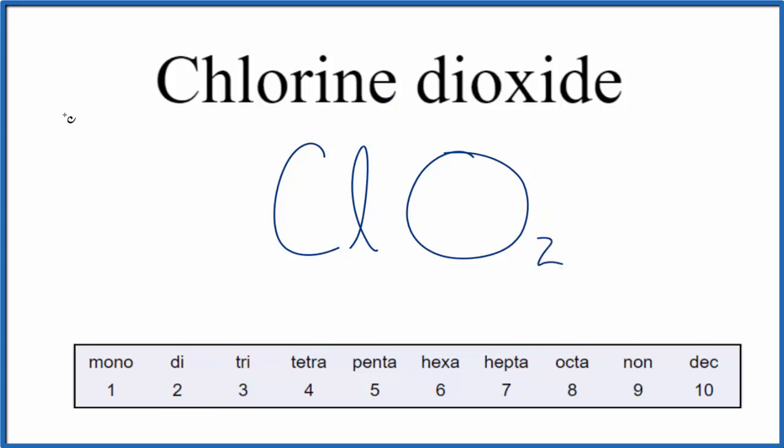For the chlorine, nothing's written in front of it, so we assume that there's just one chlorine atom, so we don't need to write anything. When we write the name for something like chlorine dioxide, even though there's one, we don't put 'mono' on the first element, we always just leave it as chlorine.